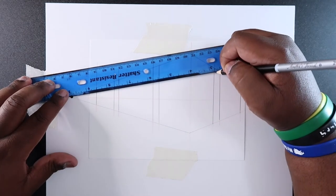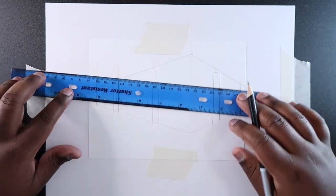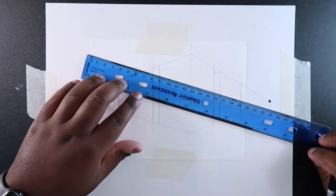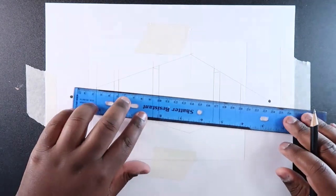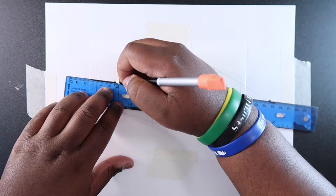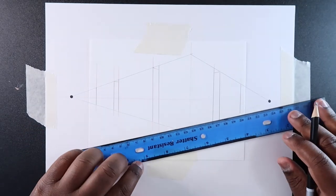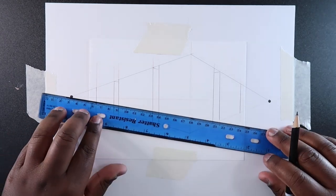That way it'll line up with the vanishing point that we have on this side. Same thing on this other building, and the same concepts apply to the ground level.